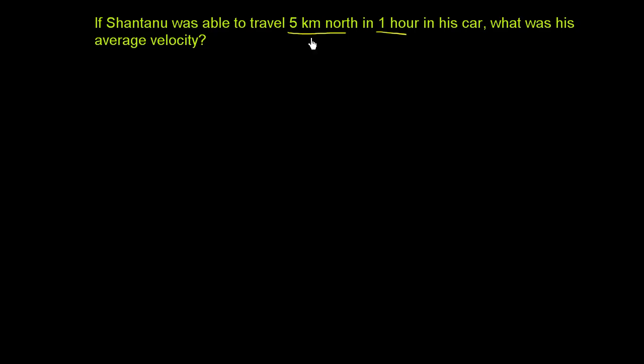So they gave us a magnitude, that's the 5 kilometers, that's the size of how far he moved, and they also give a direction. So he moved a distance of 5 kilometers. Distance is the scalar, but if you give the direction too, you get the displacement. So this right here is a vector quantity. He was displaced 5 kilometers to the north.